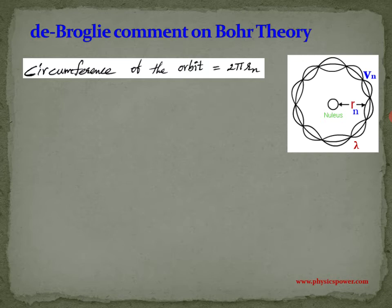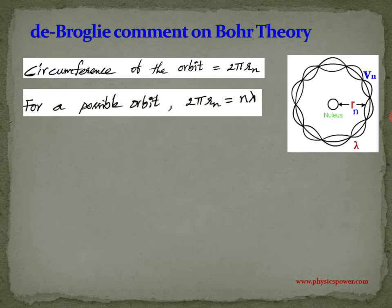Now, according to Bohr theory, when the electron completes one full rotation, the total distance covered is 2πrn. By De Broglie's condition, for a complete rotation, the total path length must be an integral multiple of lambda: 2πrn equals lambda, 2 lambda, 3 lambda, or in general n lambda.